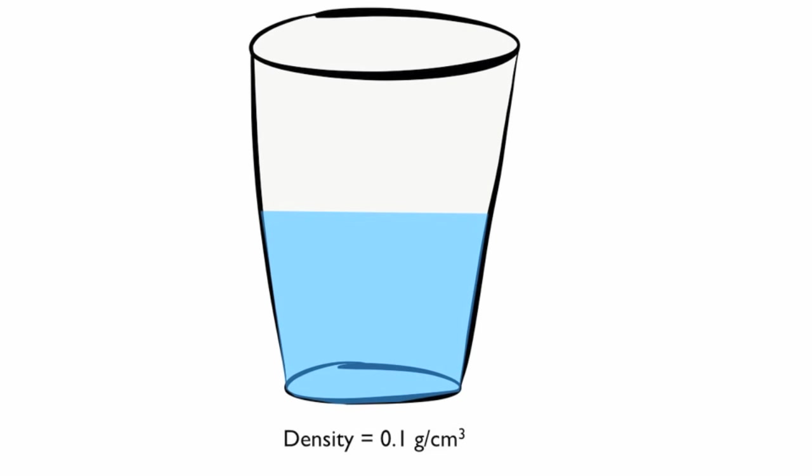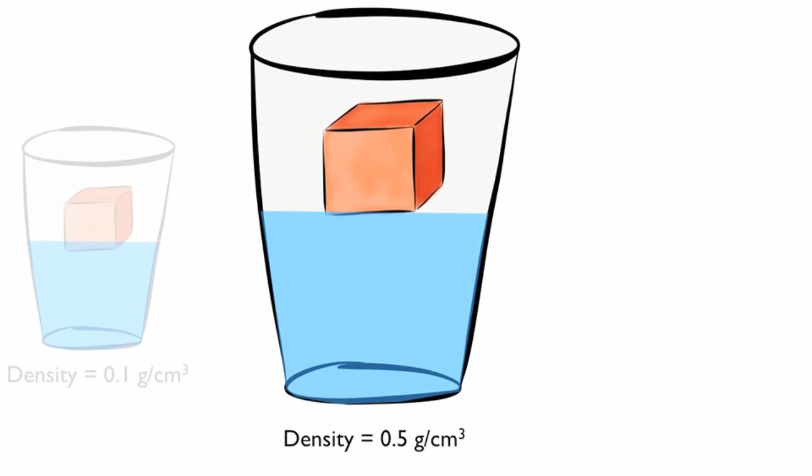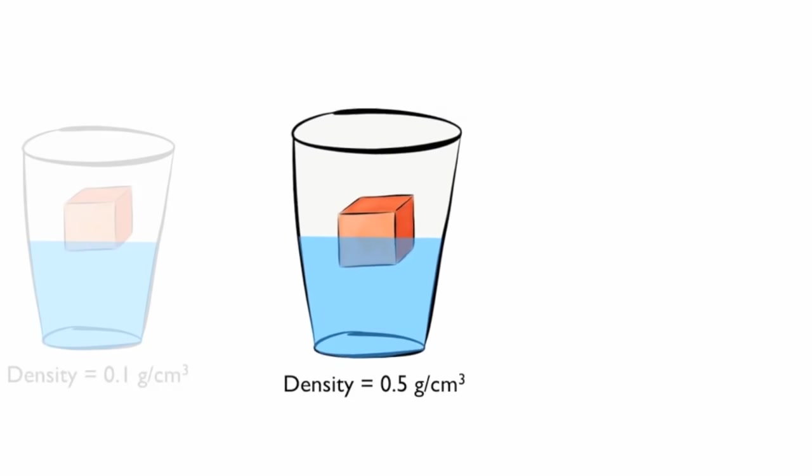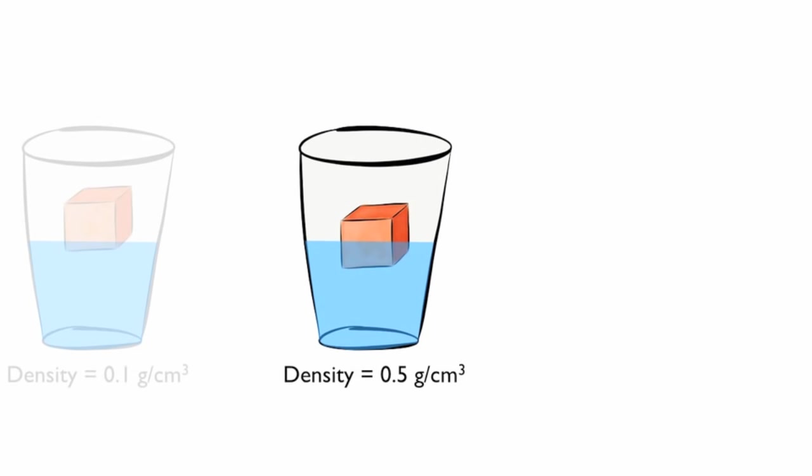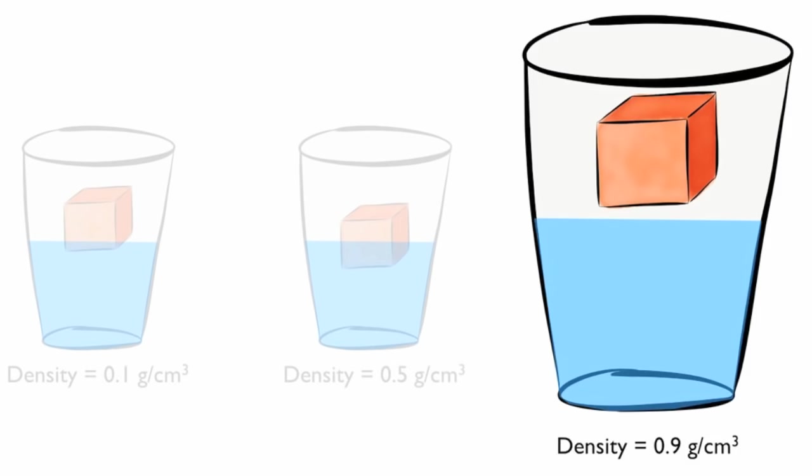If a block has a density of 0.1, it will float because its density is less than 1. Another block with a density of 0.5 will also float because its density is less than 1. Notice that more of the block was below the water line. Another block with a density of 0.9 is also less dense than water so it will float.